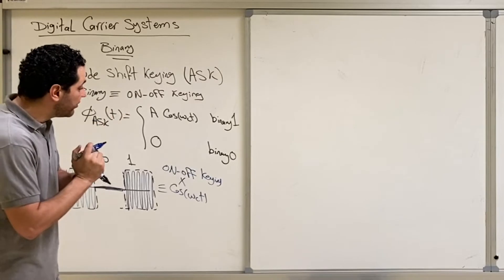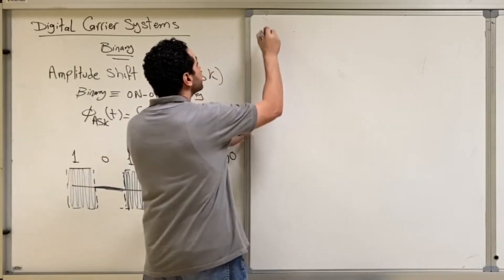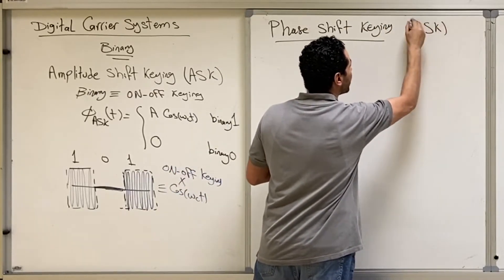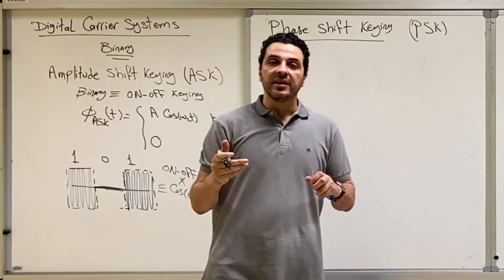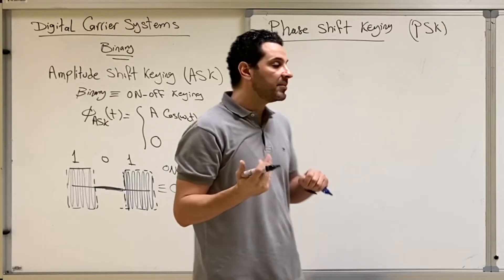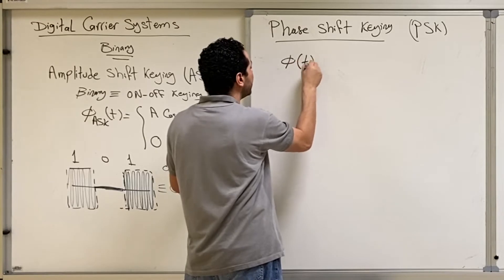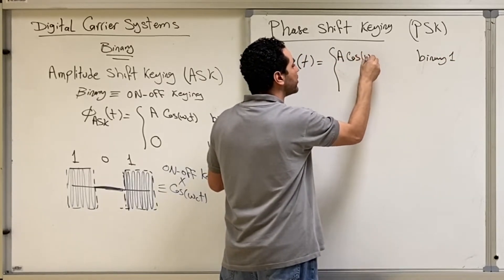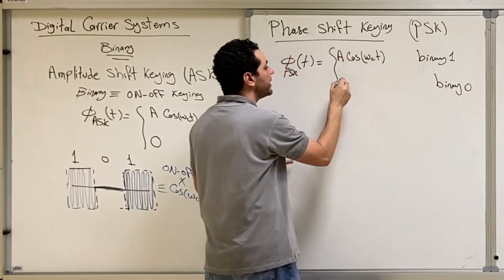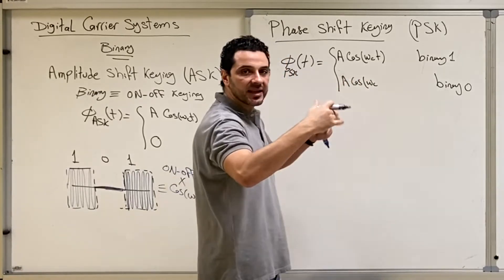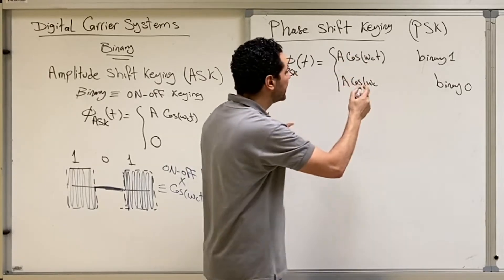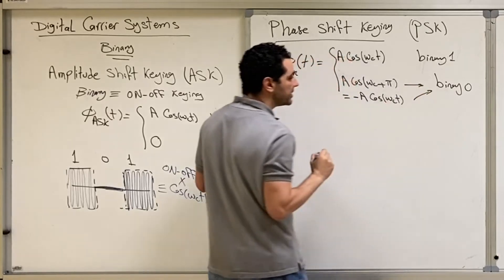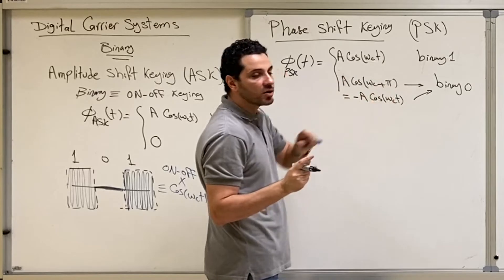In Phase Shift Keying, abbreviated PSK, we need to transmit the carrier with two different phases: one phase to represent binary one and another phase to represent binary zero. The PSK signal is either a carrier with phase zero to represent binary one, or a carrier with phase pi to represent binary zero. We choose two phases that are far from each other, so zero and its opposite pi — and a phase of pi is equivalent to minus A cosine(ωc·t). So phase zero represents binary one and phase pi represents binary zero.